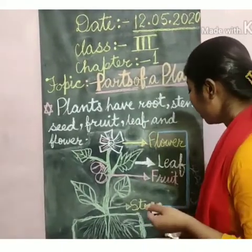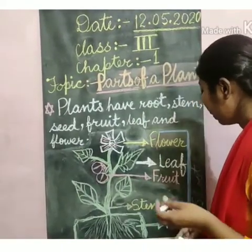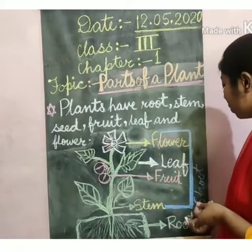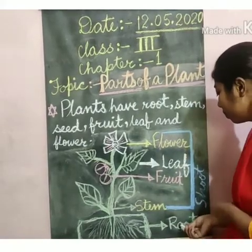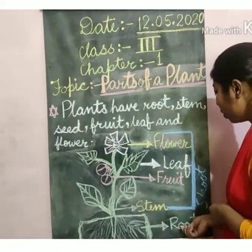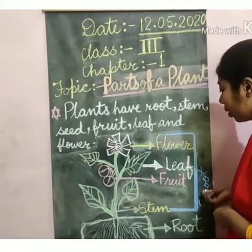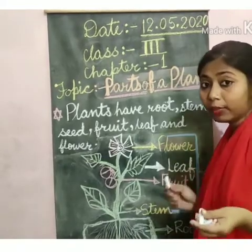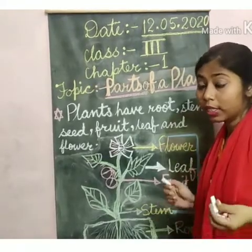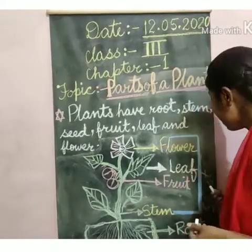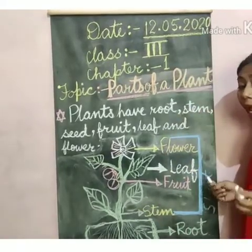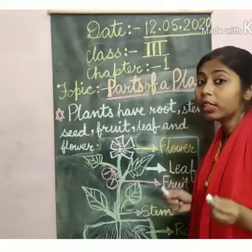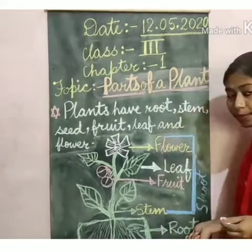Friends, plants have two main parts: root and shoot. The part above the ground is known as shoot, and the part below the ground is known as root.